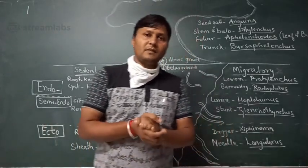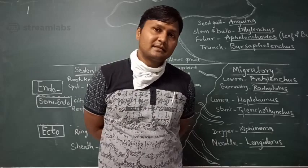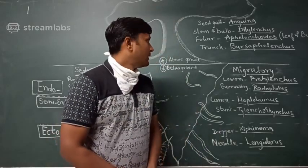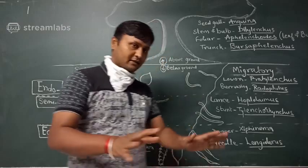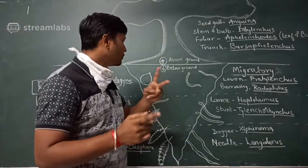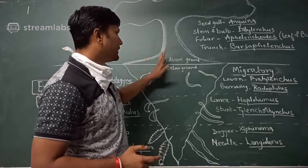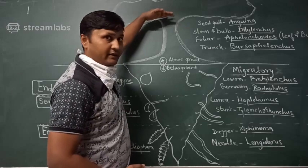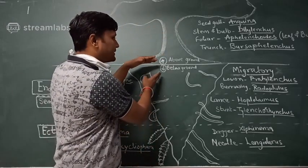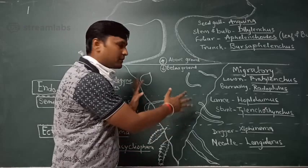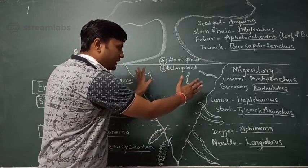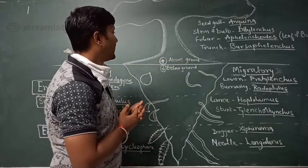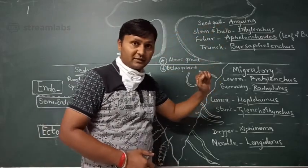Today we discuss the classification of nematodes according to their feeding habit. Nematodes are broadly categorized into two groups: above ground feeder nematodes, which feed on above ground plant parts, and another group that feeds below ground, mainly on the root system. The above ground nematodes include seed gall nematodes as the first category.